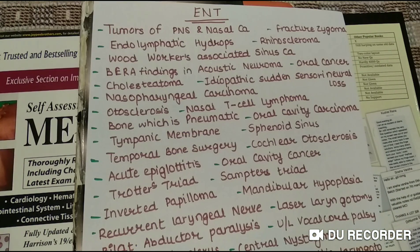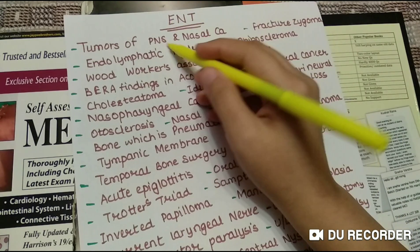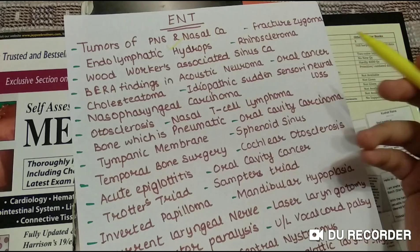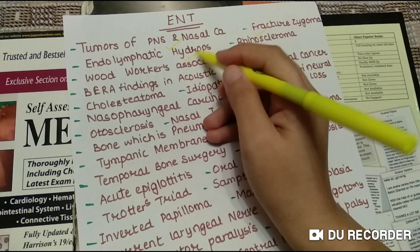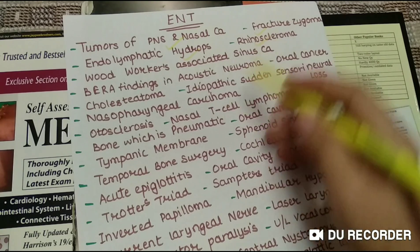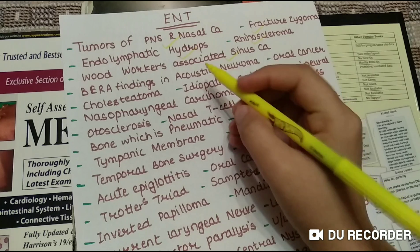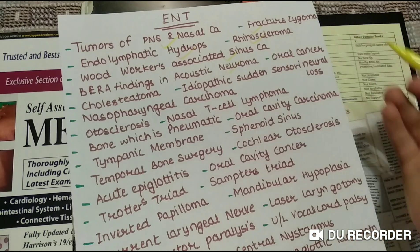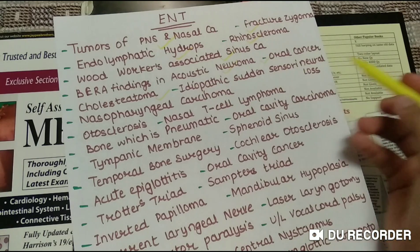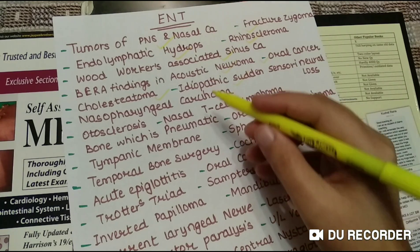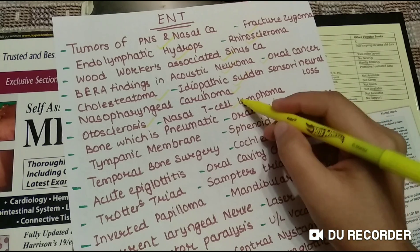Next subject ENT topic list for PGI: tumors of PNS and nasal cancer, fracture zygoma, endolymphatic hydrops, rhinoscleroma, woodworkers associated sinus cancer, BERA, findings in acoustic neuroma, oral cancer, cholesteatoma, idiopathic sudden sensorineural loss, nasopharyngeal carcinoma, otosclerosis, nasal T-cell lymphoma.